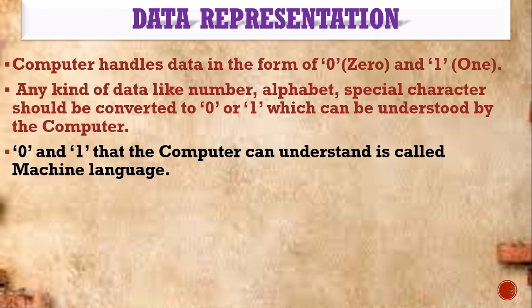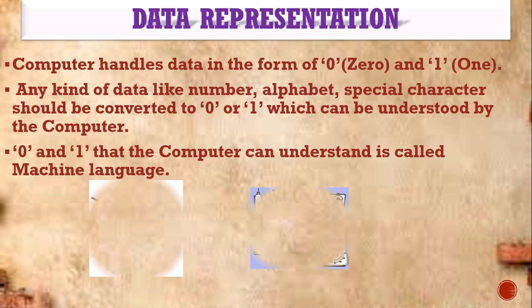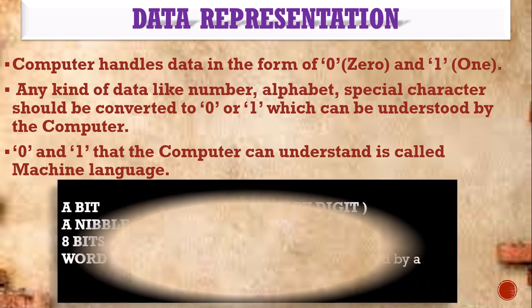The zeros and ones that the computer understands is called machine language. We also have measurements — to measure liquid items we use liters, for solid items we use kg. Similarly, to measure the quantity and size of computer devices, we use bytes. The byte is fully made up of bits.